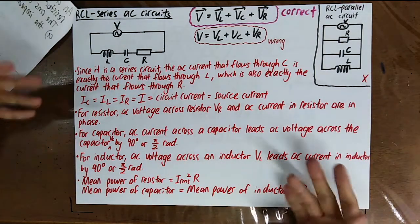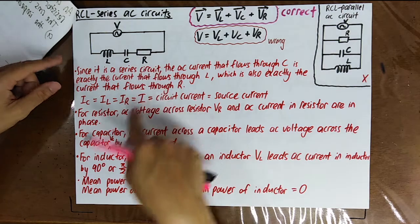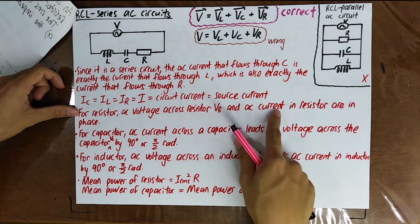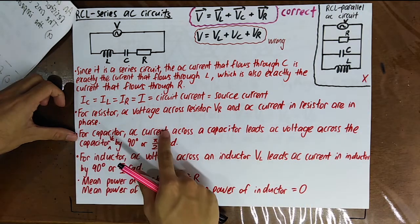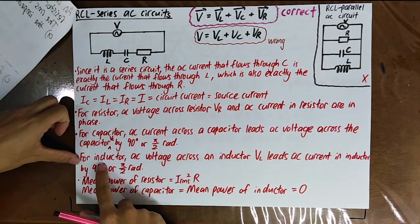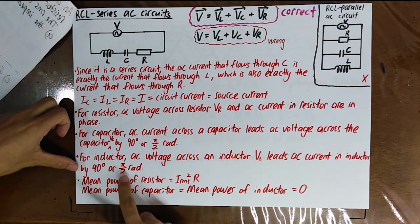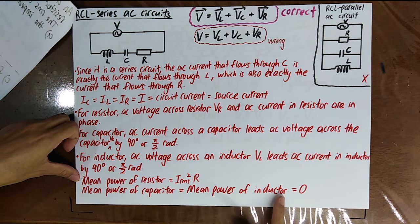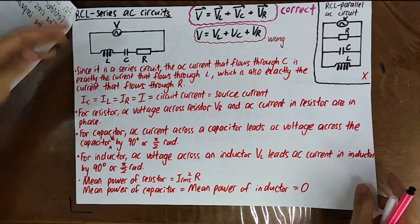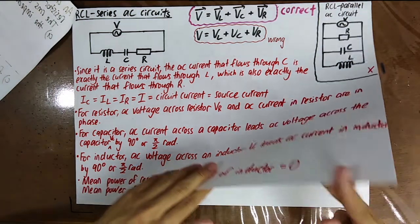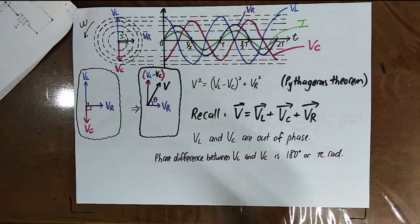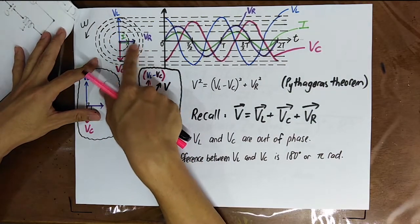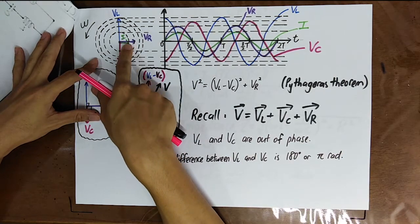Since it is a series circuit, IC = IL = IR = I. For the resistor, V and I are in phase. For the capacitor, current leads voltage by 90 degrees. For the inductor, voltage leads current by 90 degrees. The mean power of the resistor follows its formula; mean power of the capacitor and inductor are both zero.